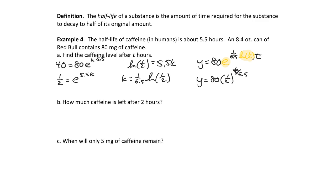We want to know how much caffeine is left after two hours. It will certainly be more than 40 since it takes 5.5 hours to reach 40. We plug t equals 2 into the formula: y equals 80 times (1/2) to the 2/5.5, which is about 62.18 milligrams.